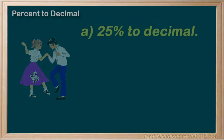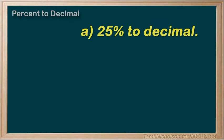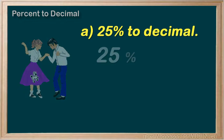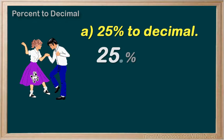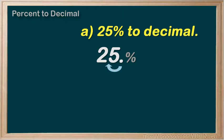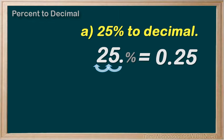Here we have 25 percent. Divide by 100. Do your decimal dance — move the decimal point two spaces to the left: move one, move two, and 25 percent equals 0.25. Make sure there is no percent sign. Voila! Your answer is 0.25.